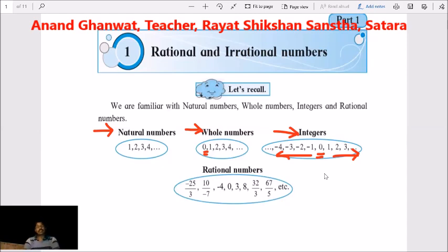Next types of numbers are Rational numbers. These numbers you have learnt in 7th Standard. Here, you have also learned the definition of rational numbers.